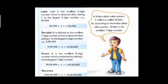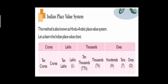After Lakh, we will get 10 Lakh. If you are having seven digits, it is called 10 Lakh — the smallest seven-digit number. After 10 Lakh, we will get Crore. Crore is the smallest eight-digit number. After Crore, we will get 10 Crore, which is the smallest nine-digit number. So in the Indian place value system, from right to left: Ones, Tens, Hundreds, Thousands, Ten Thousands, Lakhs, Ten Lakhs, Crores and Ten Crores.